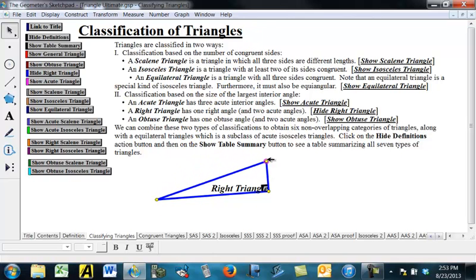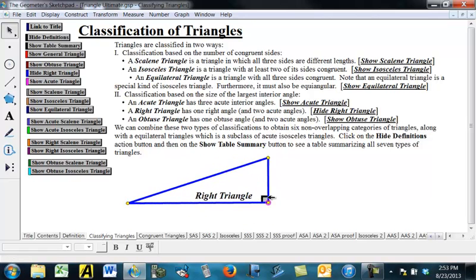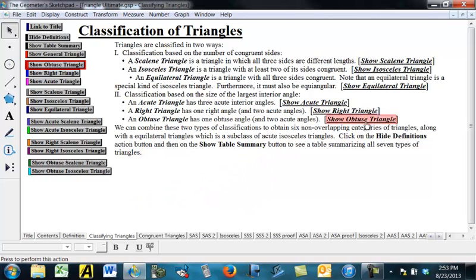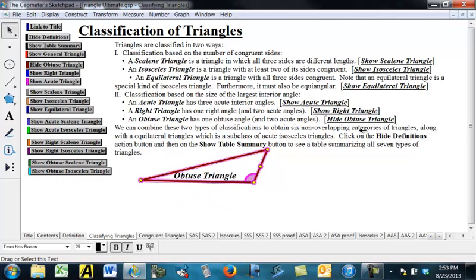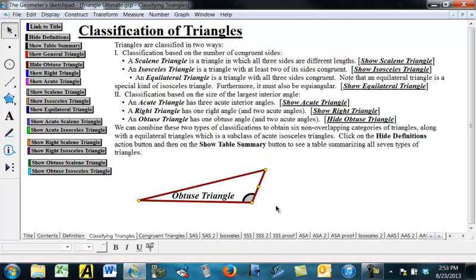And this one is constructed in such a way that it always stays a right triangle, but we can get every possible right triangle. And an obtuse triangle is a triangle in which the largest angle is obtuse, and of course, then again, the other two angles will be acute.